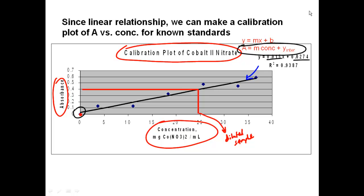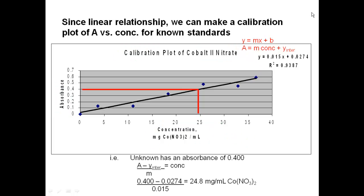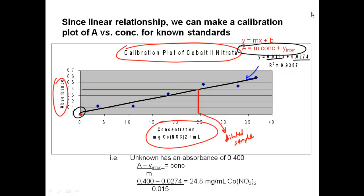Take your unknown, rearrange the equation: concentration equals (absorbance minus y-intercept) divided by slope. In this example that gives (0.4 minus 0.0274) divided by 0.015, which equals 24.8 milligrams per milliliter.